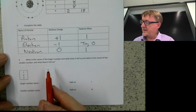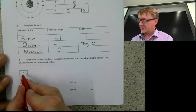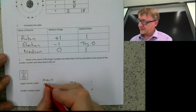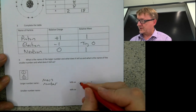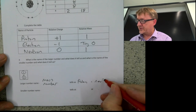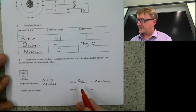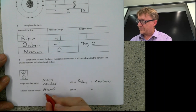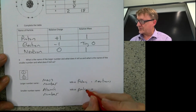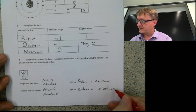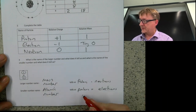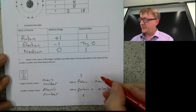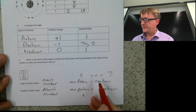Question number four: what is the name of the larger number and what does it tell us, and what is the name of the smaller number and what does it tell us? The large number is the mass number, and that tells us the number of protons added to the number of neutrons. The smaller number is the atomic number, and that is the number of protons or the number of electrons. So for lithium: atomic number is 3, so it has 3 protons and 3 electrons. Three plus the number of neutrons equals seven, so the number of neutrons is four.